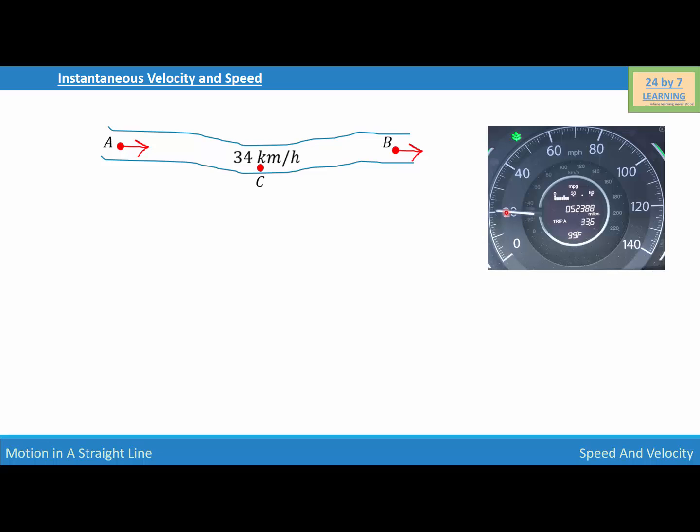My instantaneous speed is 34 kilometers per hour, but if I tell you that I was driving from A to B when I was at point C, then basically I'm giving you the magnitude as well as direction, and that is known as instantaneous velocity.